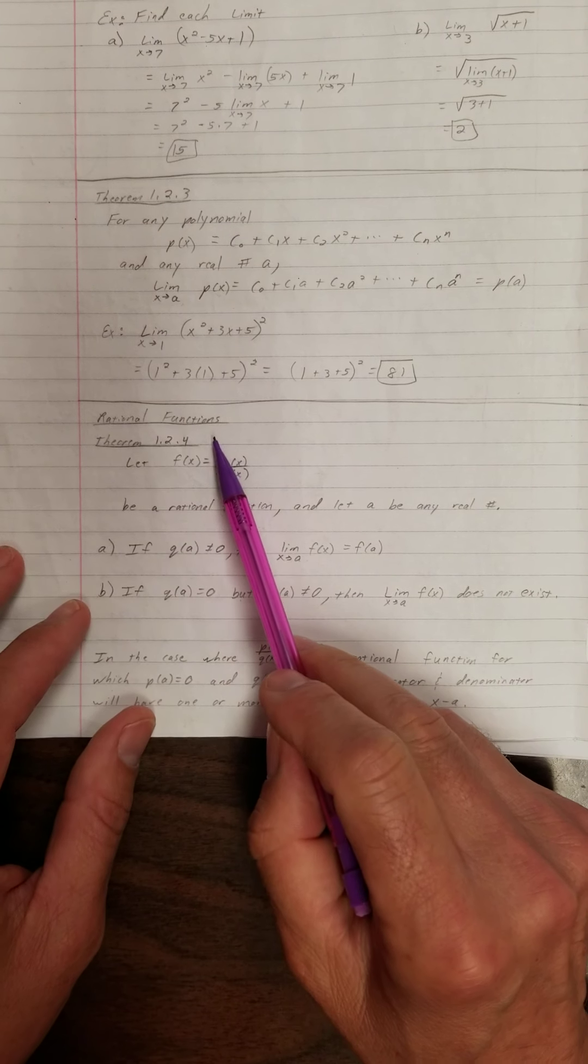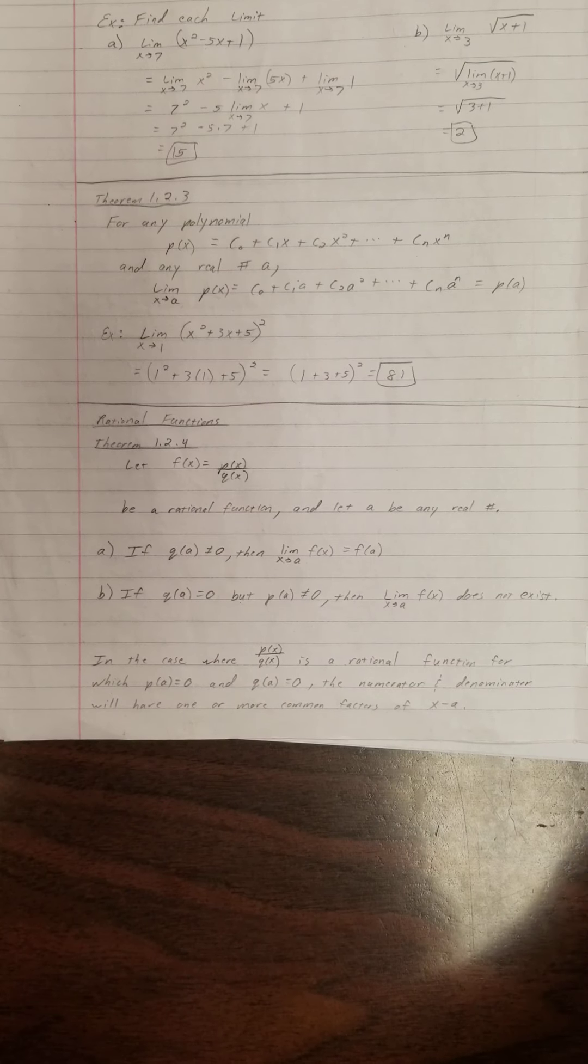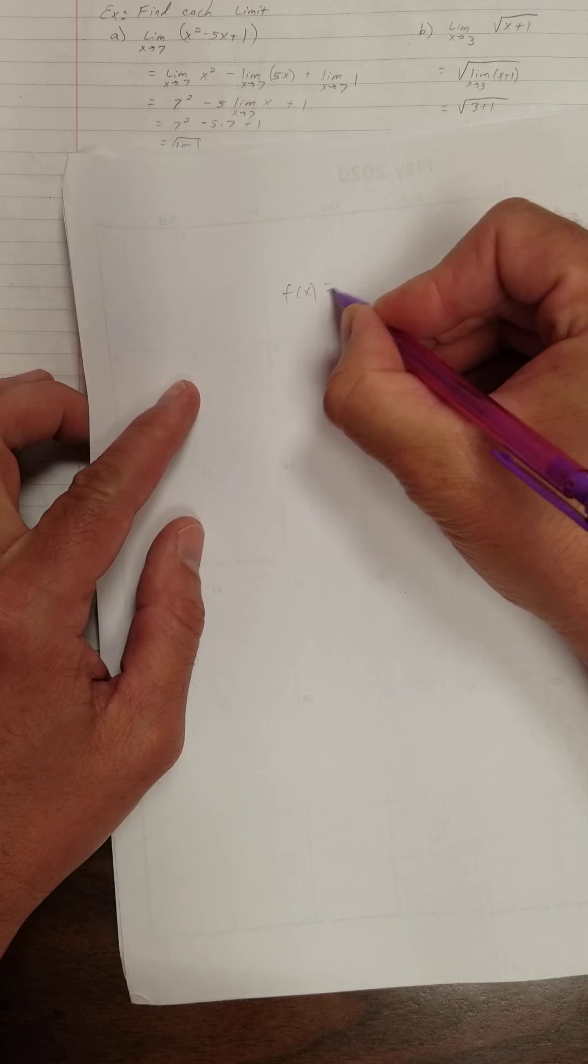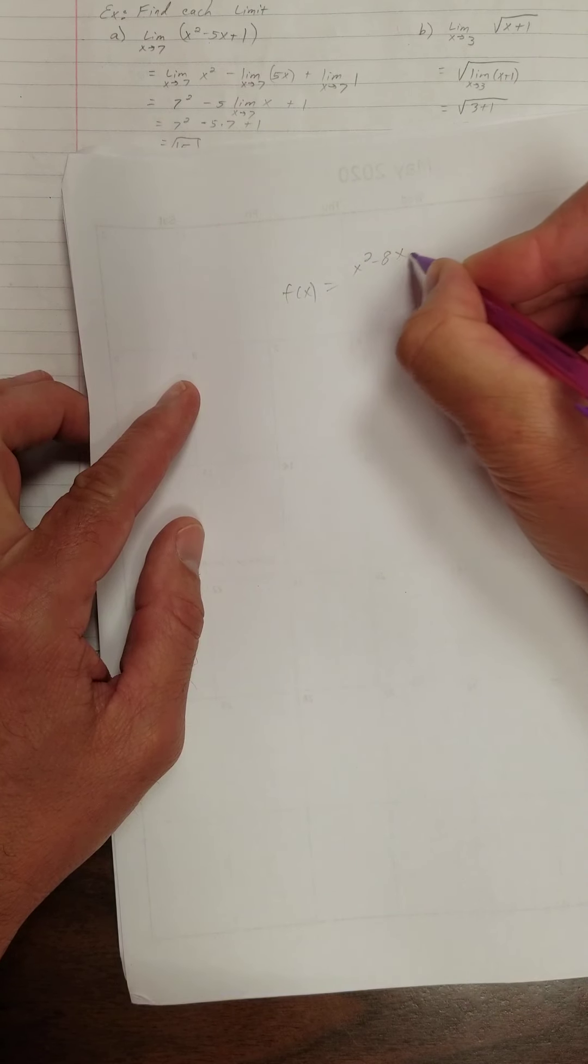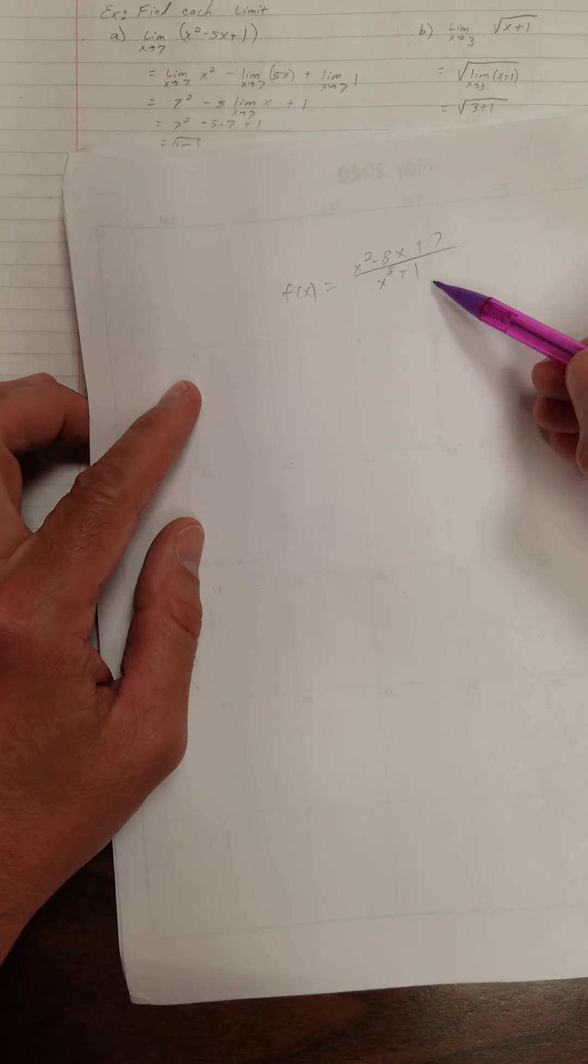Let's look at rational functions. What's an example of a rational function? Well, that's something like f of x equals x squared minus 8x plus 7 over x to the fifth plus 1. A polynomial over a polynomial is a rational function.